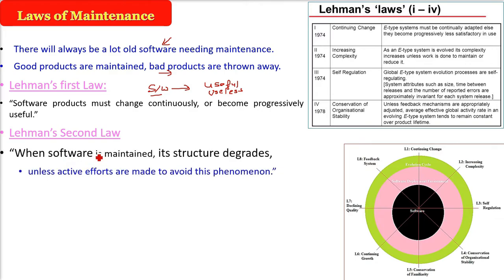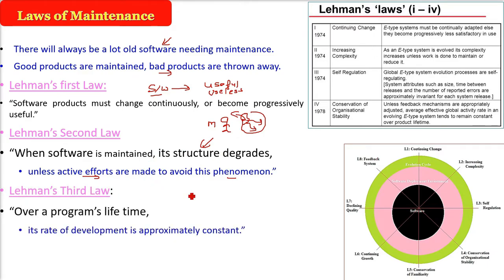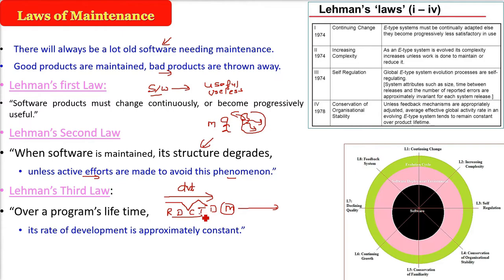Lehmann's second law says when software is maintained, its structure degrades — and it always happens. This is why we do regression testing: if a maintenance engineer tries to fix a bug in one part and creates 10 more bugs, you need to put a lot of effort into maintenance to avoid this kind of regression. Lehmann's third law states that over a program's lifetime, its rate of development is approximately constant — there is no peak and no trough. Right from requirement, design, coding, testing, deployment, and maintenance, the rate of development with time remains constant.